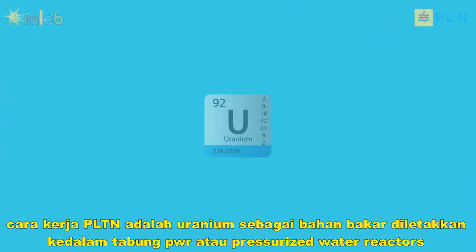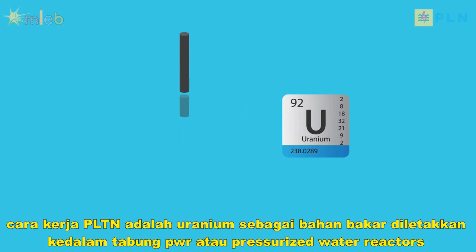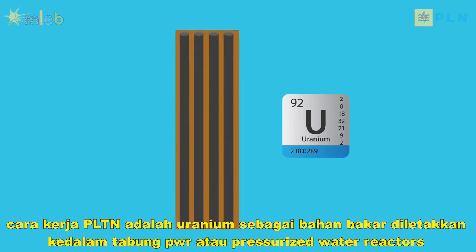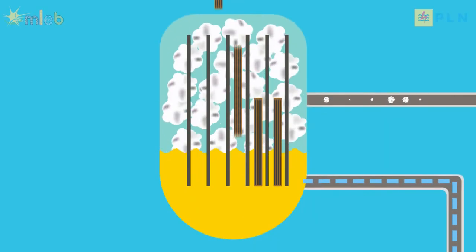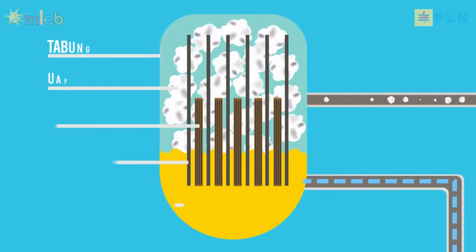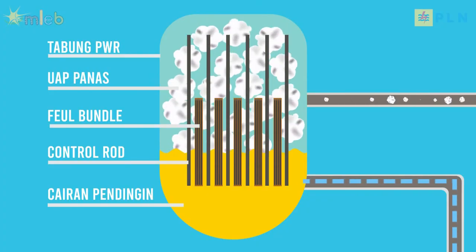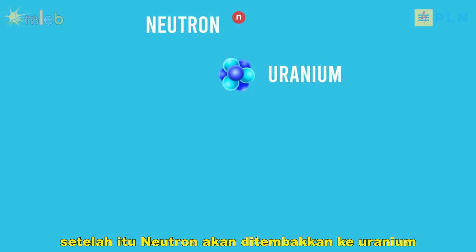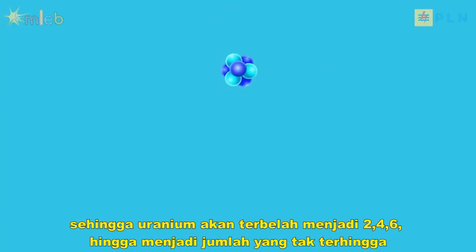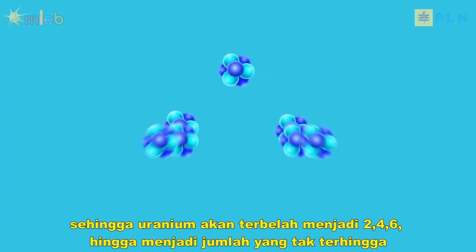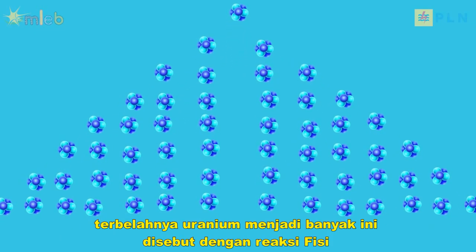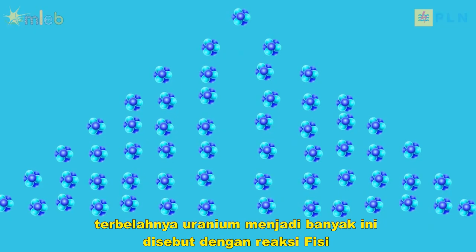The working principle of a nuclear power plant is that uranium as fuel is placed into a PWR, or pressurized water reactor tube. After that, neutrons will be fired at uranium so that the uranium splits into 2, 4, 6, up to an infinite number. This splitting of uranium into many parts is called a fission reaction.